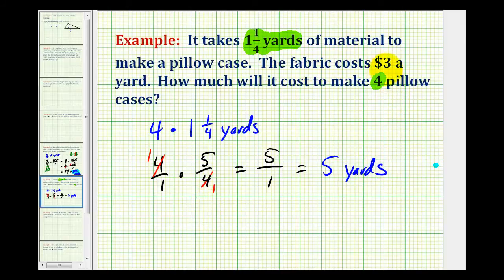And since it costs three dollars a yard, the total cost to make four pillowcases is going to be five times three, or fifteen dollars.